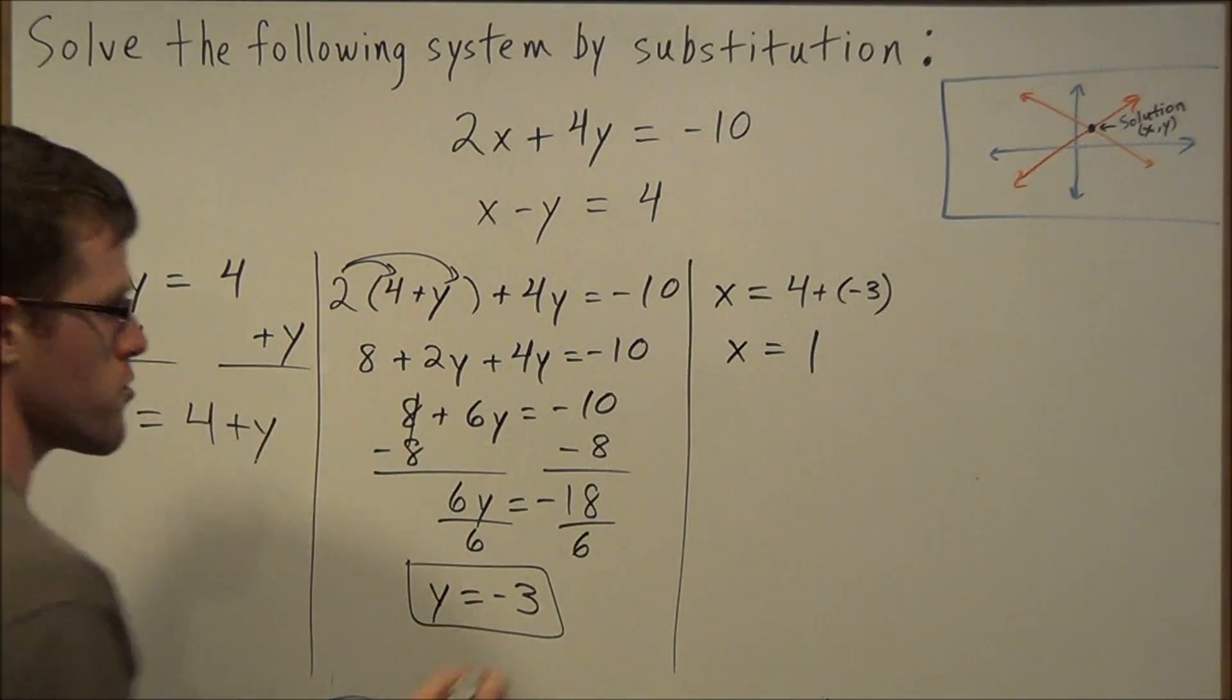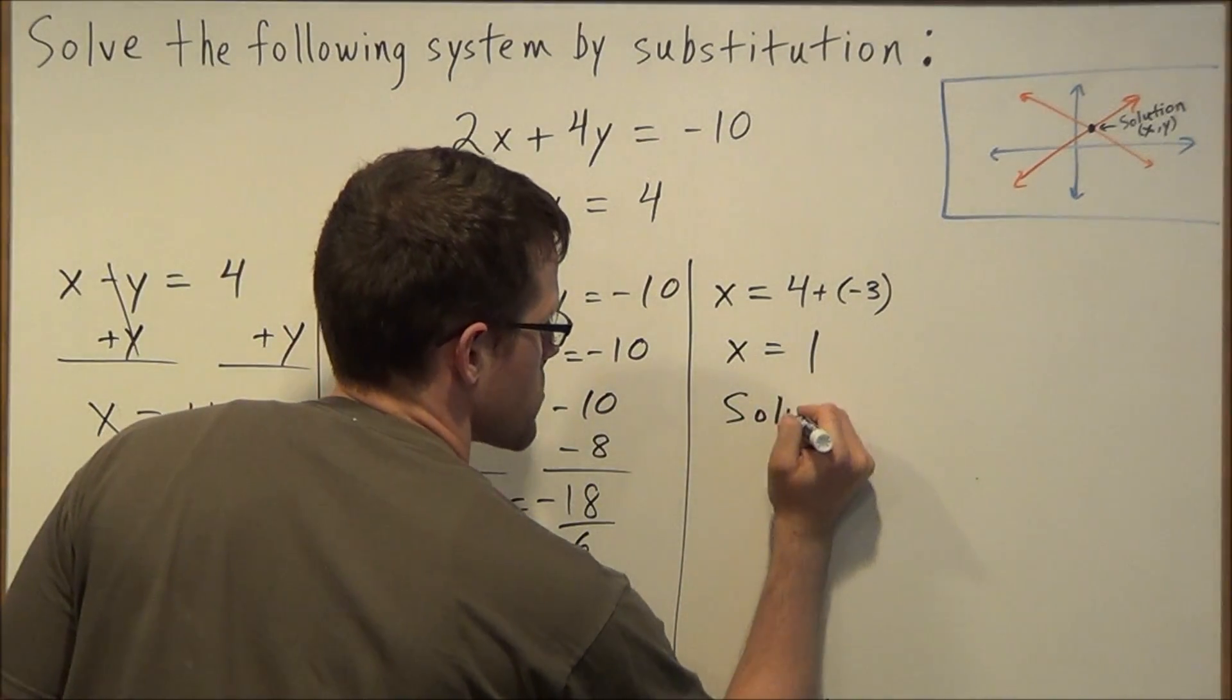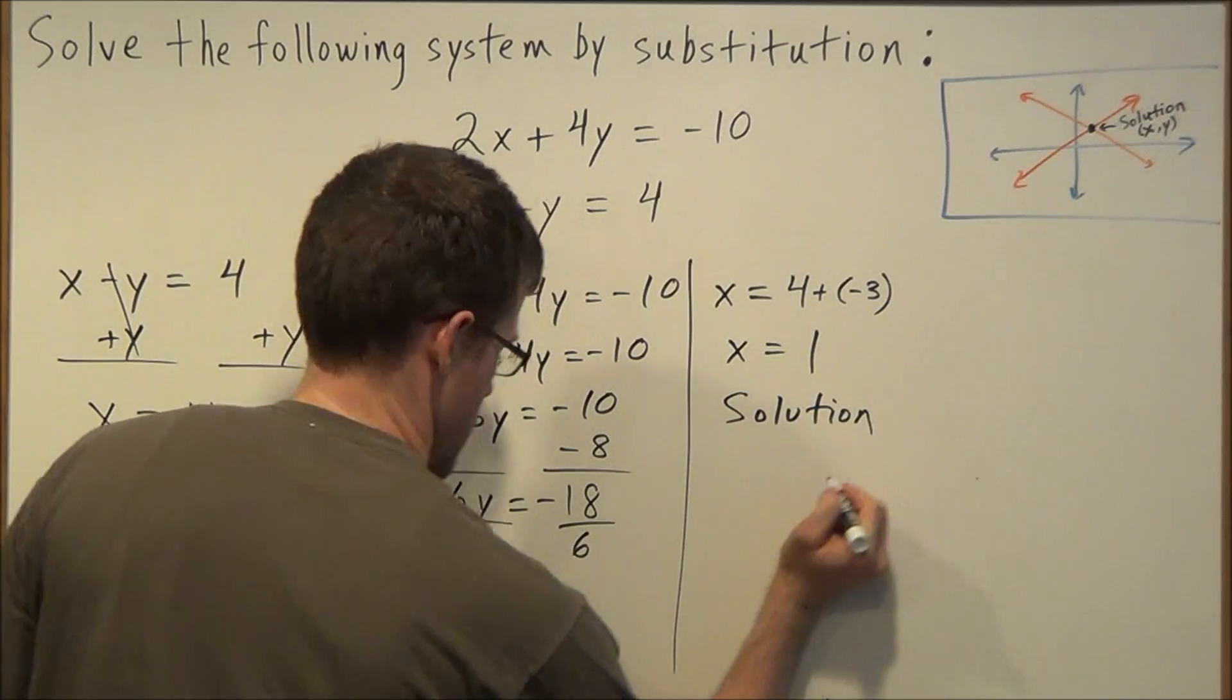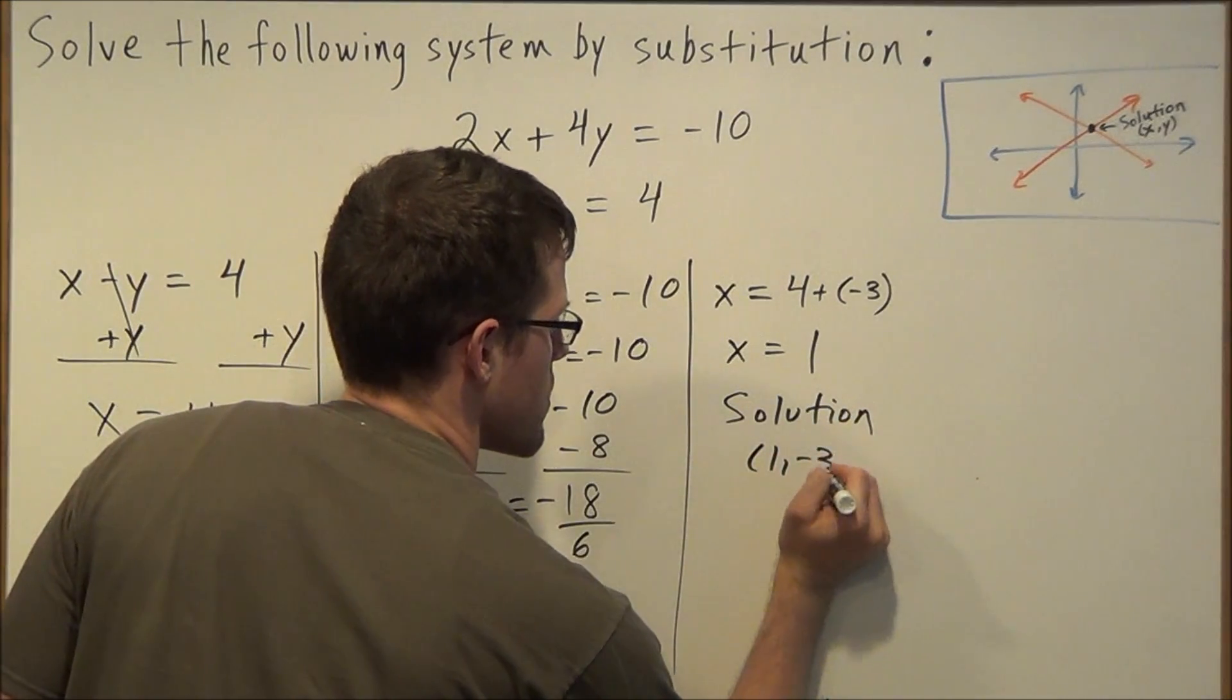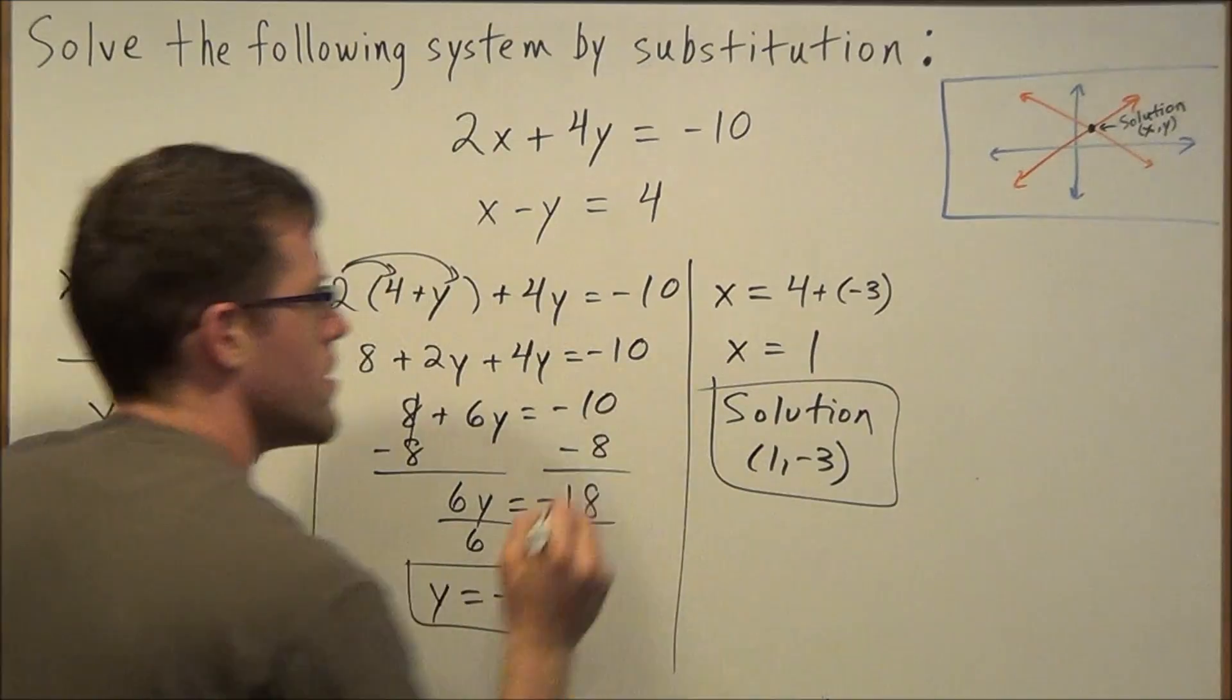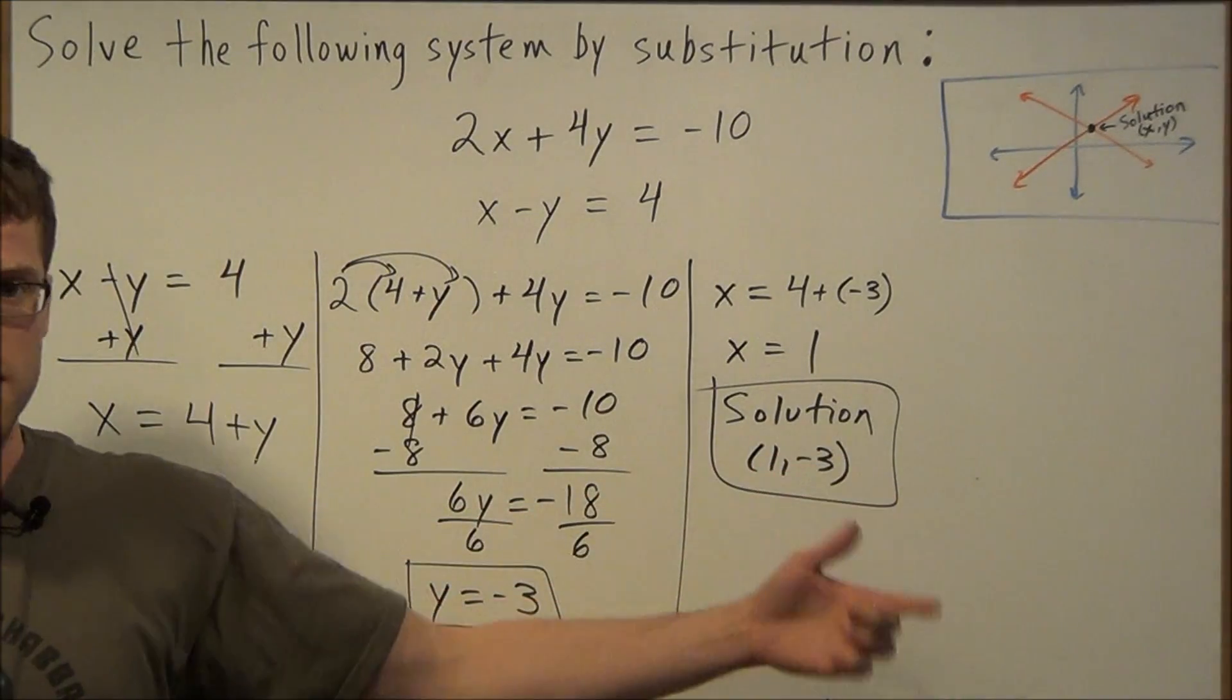So if we want to write out our solution formally, our solution is 1 negative 3. Now this is our final answer and this is correct.